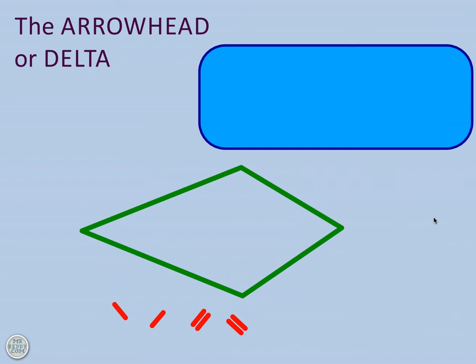Here we have a short video on the arrowhead or delta shape. Now you're probably thinking it doesn't look very much like an arrowhead. In fact, it looks a lot like a kite, and that's because it is at the moment. The kite and the arrowhead have very similar properties.